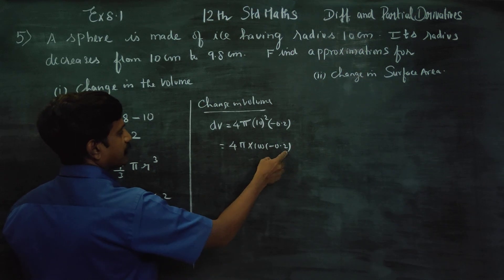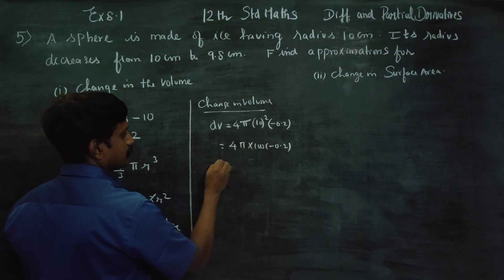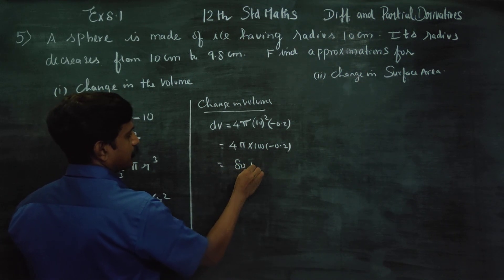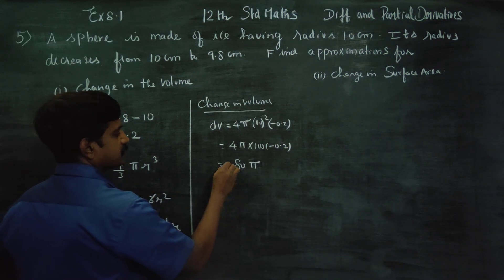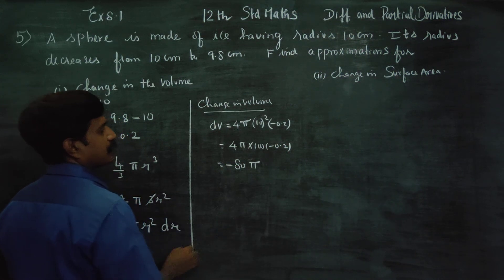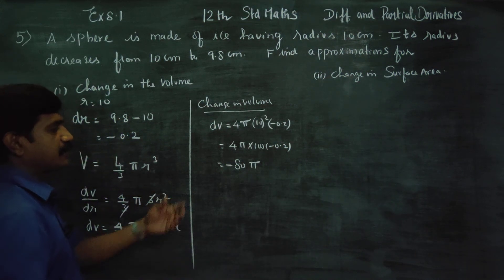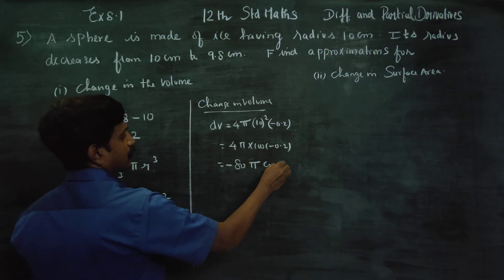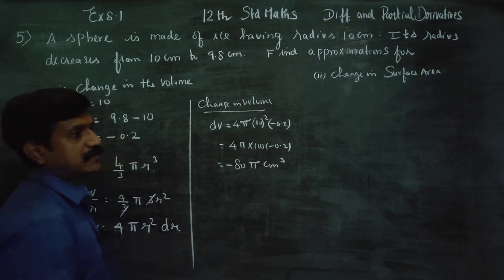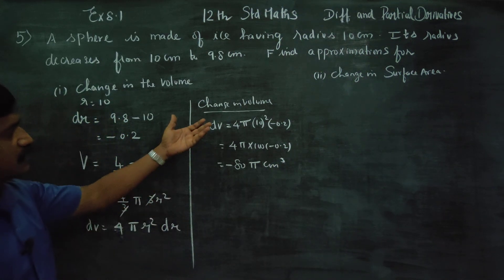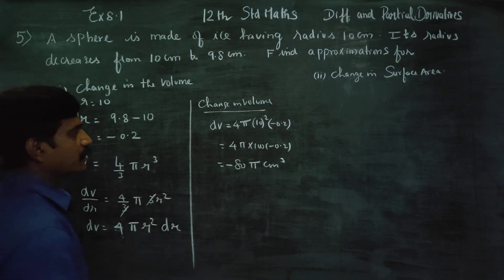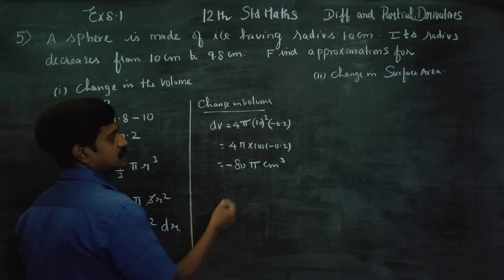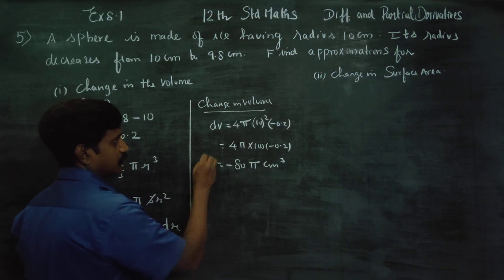Calculating: 4π into 100 into minus 0.2 equals minus 80π. So dV equals minus 80π centimeter cube. The negative sign indicates a decrease in volume.